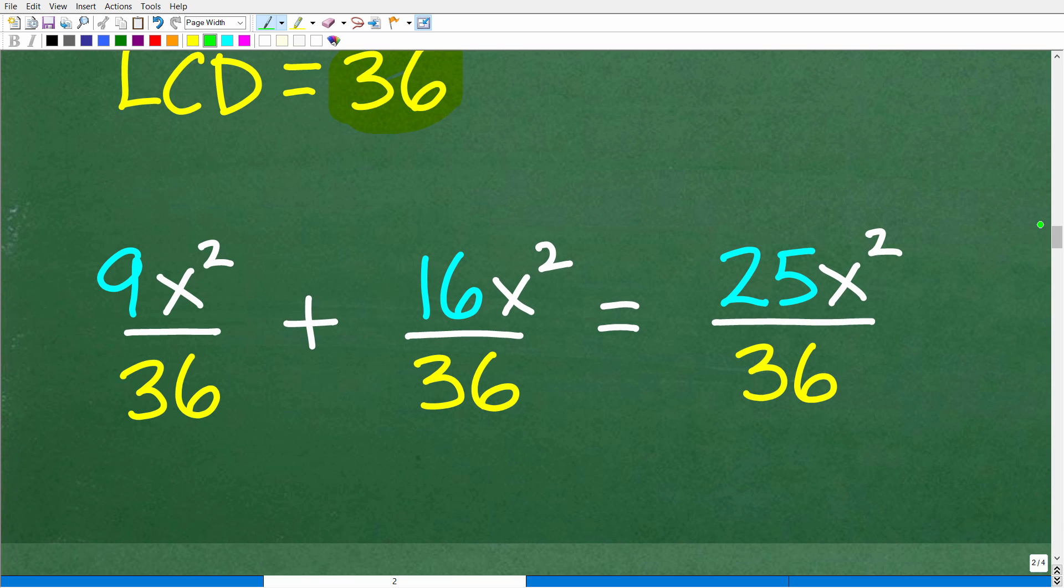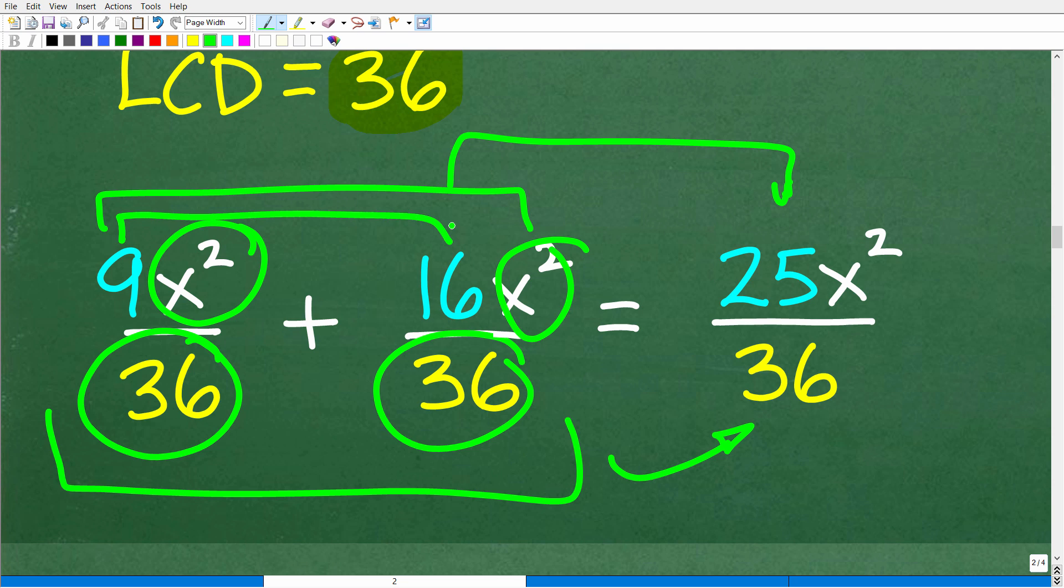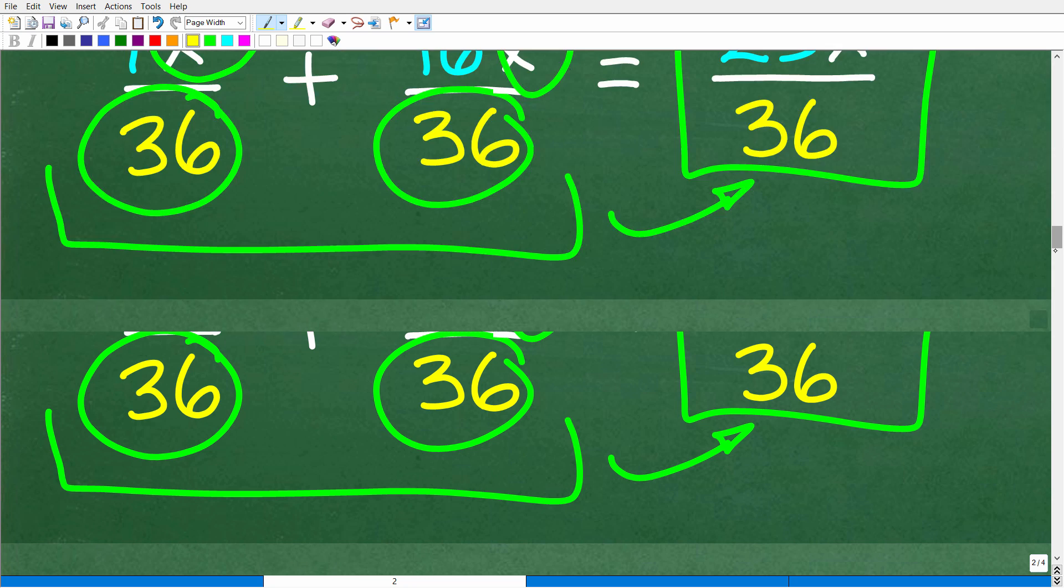So we're going to end up with 9x squared over 36 plus 16x squared over 36. Now that we have common denominators, we can simply add the numerator and put that over the denominator. So 9x squared plus 16x squared is 25x squared. These are like terms, x squared. All I have to do is add the coefficient. 9 plus 16 is 25. So we have 25x squared over 36.